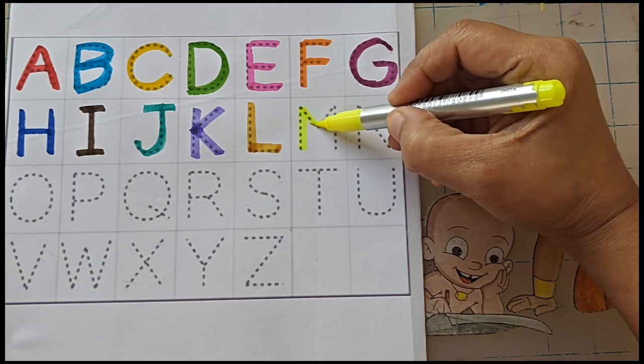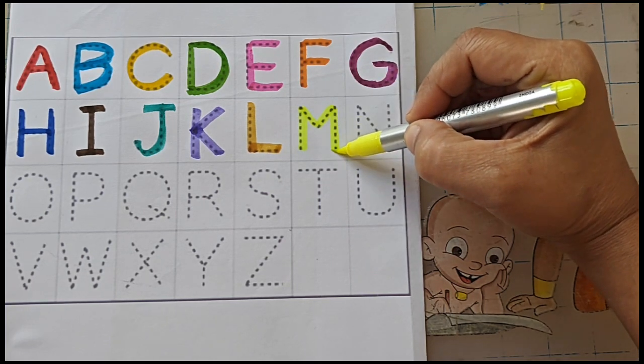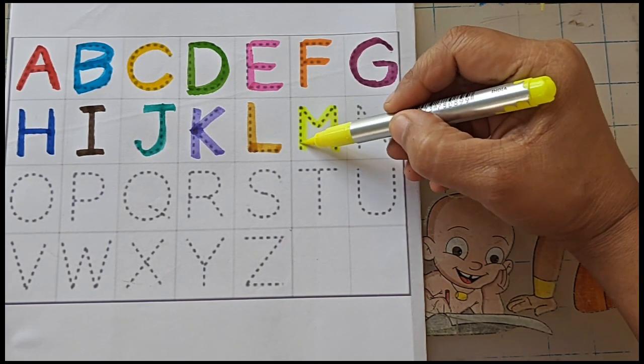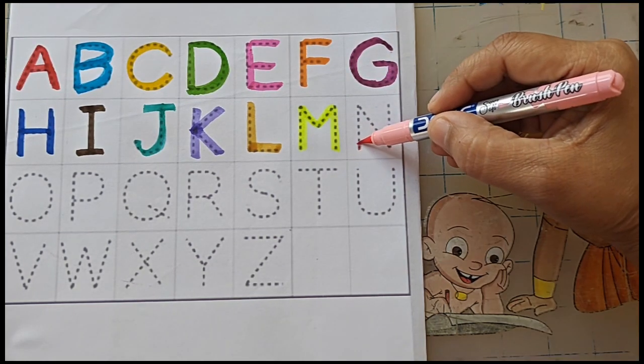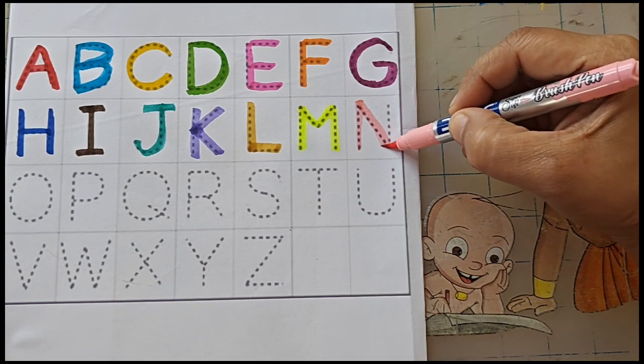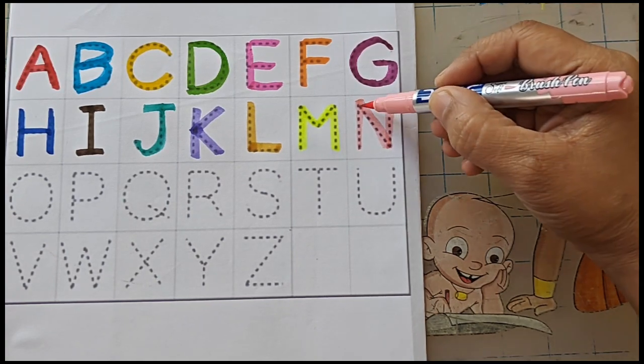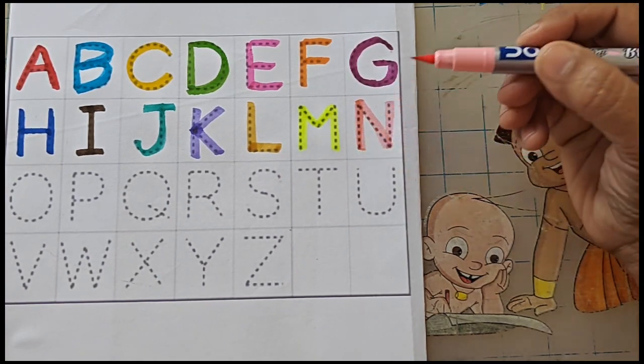M, M for mouse. M, M for mat. N, N for net. N, N for nest.